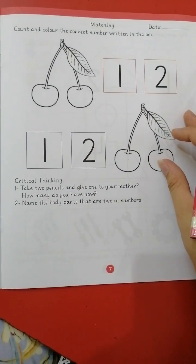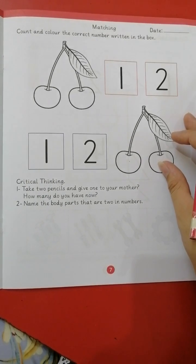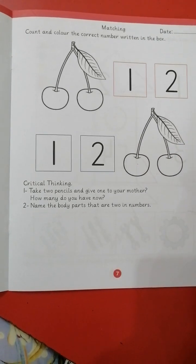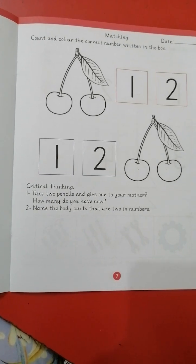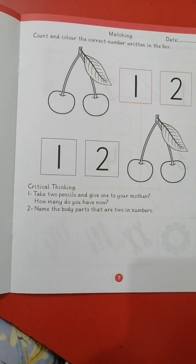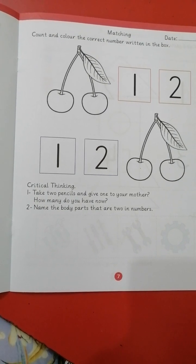Critical thinking. Take two pencils and give one to your mother. How many pencils do you have now? You have to think carefully. Next, name the body part that are two in number. We have two eyes, two ears, two hands, two legs, two feet.